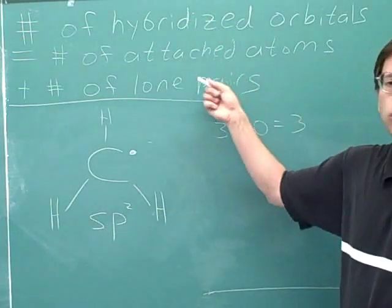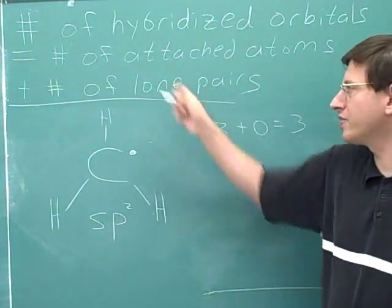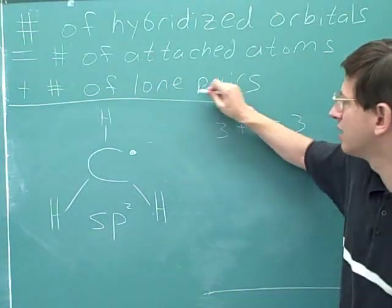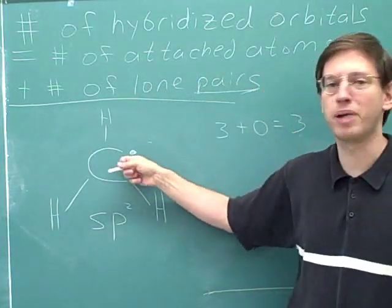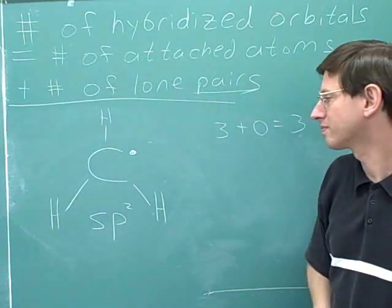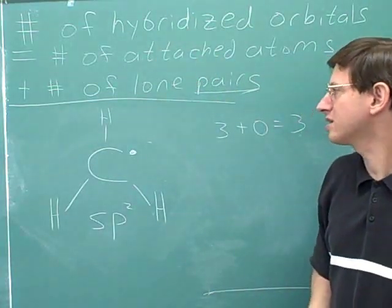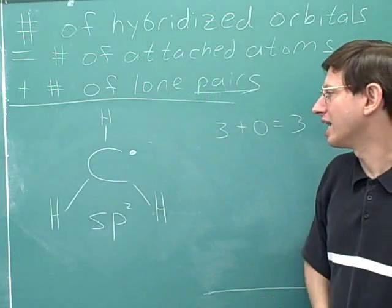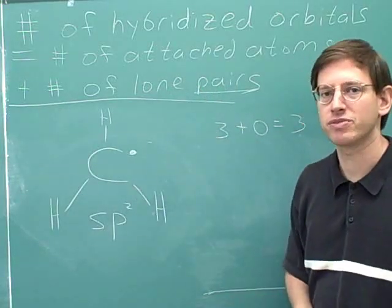So when you use this rule, you have to use it literally. When we add the number of lone pairs, we mean pairs, not unpaired electrons. So an unpaired electron does not enter into this rule. And to keep that in mind, this rule can be used for radicals as well as other types of atoms.